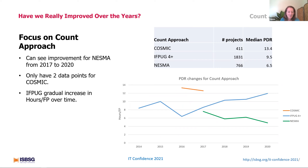For hours per function point, NESMA has improved from 2017 to 2020 based on projects submitted to our repository. We only have two data points for COSMIC, so we can't draw conclusions there. IFPUG hours per function point has steadily increased over time, and we'll go into what other factors have impacted both NESMA and IFPUG.